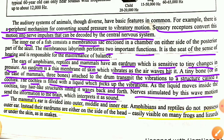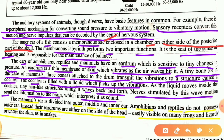The inner ear of fish has a membranous sac enclosed in a chamber on either side of the posterior part of the skull. This membranous sac has two important functions: first, it is the seat of the sense of hearing; and second, it is responsible for the maintenance of balance.